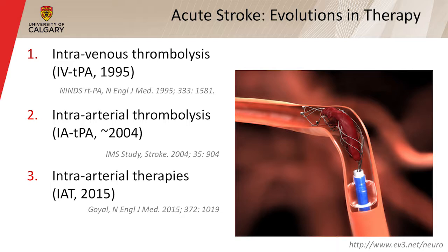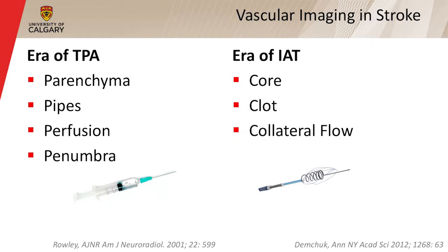Intravenous thrombolysis using TPA has been approved in North America since about 1995. Intra-arterial thrombolysis was attempted using the same agent given intra-arterially in the early 2000s with some success. Most recently, we've had a new vista in stroke therapy — intra-arterial therapies using clot retrieval devices, which go in intravascularly and snare and withdraw the clot. A number of studies published last year, including the ESCAPE trial from Calgary, reached the same conclusions in large randomized trials: these mechanical retrieval devices are effective. So there have been two eras in stroke over the last 20 years — the era of TPA and now the era of intra-arterial therapy.